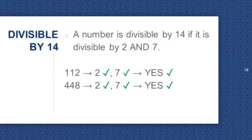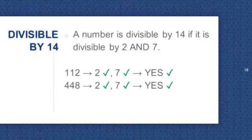Divisible by 14. A number is divisible by 14 if it is divisible by both 2 and 7. Let's take a look at these examples. 112 is divisible by 2 and 7, so it's divisible by 14. 448 is divisible by 2 and 7, so it's also divisible by 14.